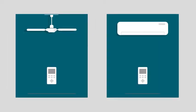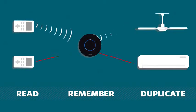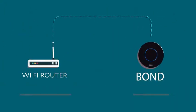The remote controls in your home send special signals using radio waves or infrared. The Bond can read, remember, and duplicate these signals. It also connects to your home Wi-Fi.